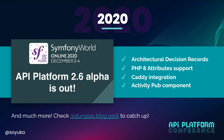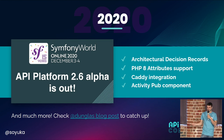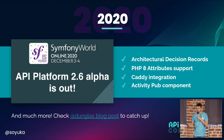In 2020, the API Platform 2.6 version was announced. It has a really big changelog, and people were kind of not happy with that, but there were lots of changes. And at that point, we introduced architectural decision records.